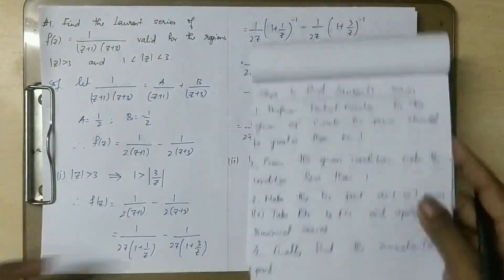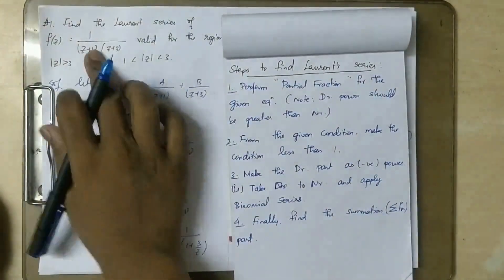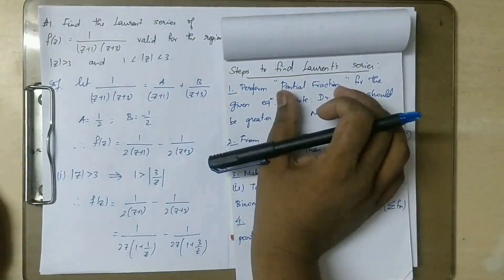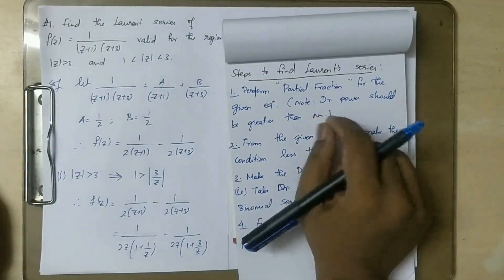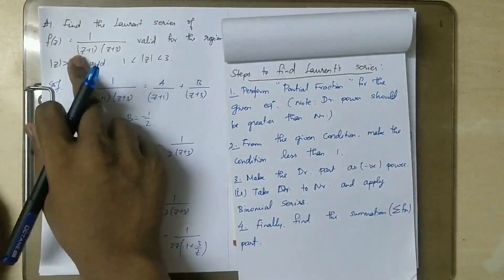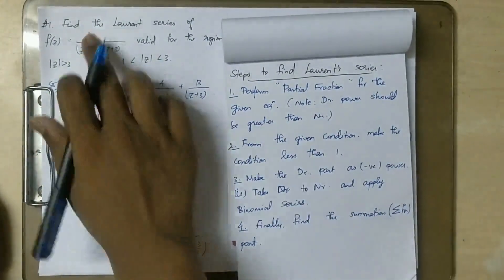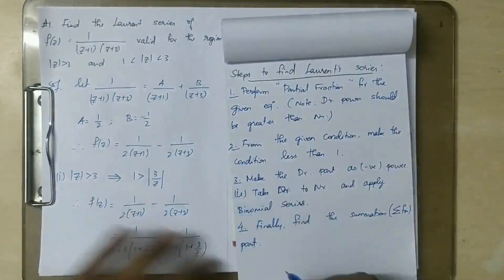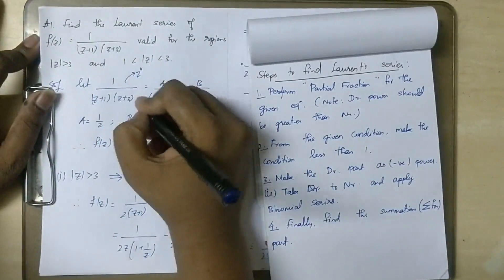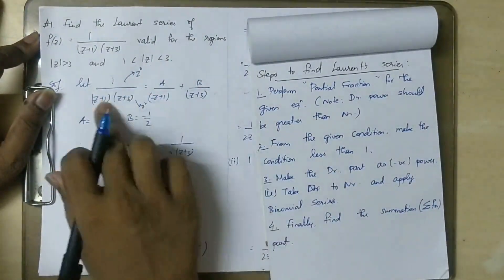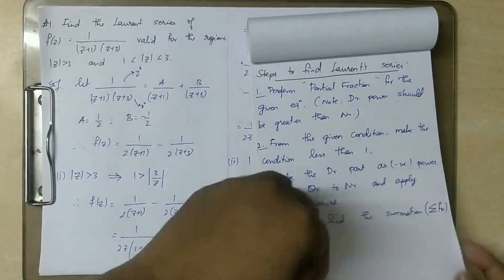So the Laurent series steps are: first thing, given a function, you have to take the partial fraction. So partial fraction would be the basic step. Now the denominator has power z — z into (z+1)(z+3) — so the degree of the denominator is greater than the numerator power.